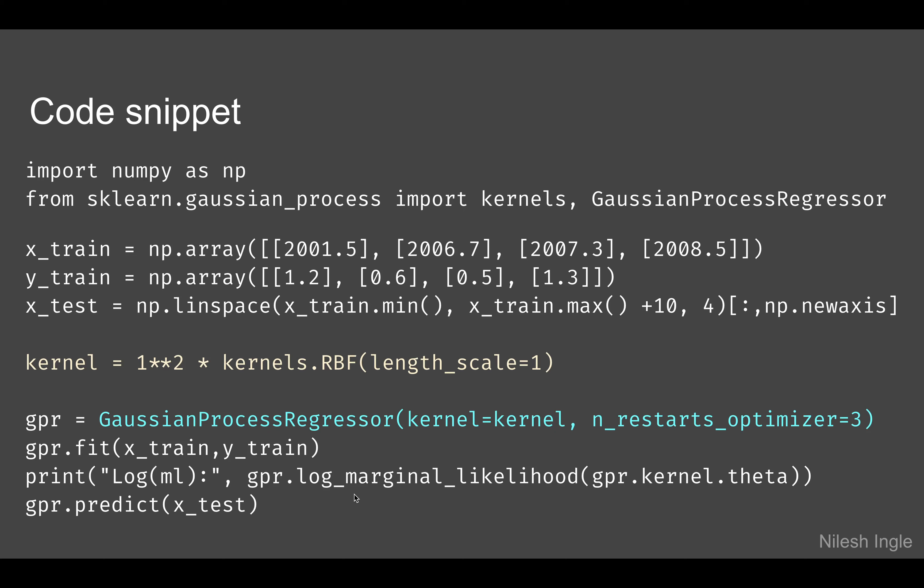That was it for this video. I hope in this video you learned what are the different kernels that can be used with scikit-learn to perform Gaussian process and also a general intuition about what Gaussian process is.